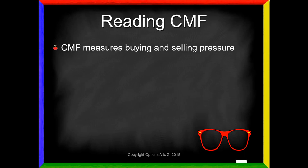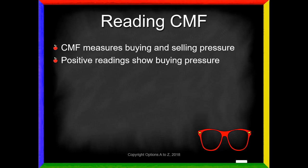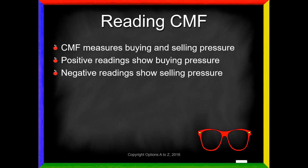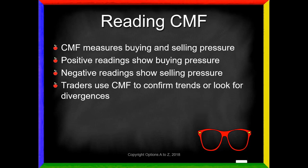So how do we read the Chaikin Money Flow? It measures buying and selling pressure. Positive readings show buying pressure; negative readings show selling pressure. Traders use the CMF to confirm trends or look for divergences. For example, if you see the stock price trending up and the CMF is also positive, you have more confidence you're in a true trend. However, if the stock price is trending up but the CMF turns negative, that's a divergence — you might question whether that trend is real or if traders are just bidding the price up without supporting volume.